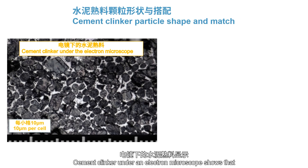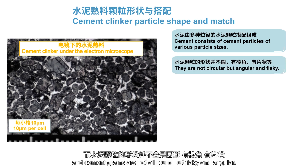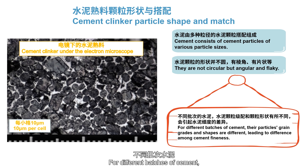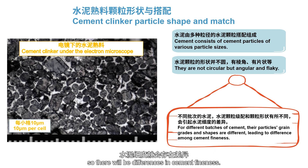Cement clinker under an electron microscope shows that cement clinker is composed of cement grains with various particle sizes, and cement grains are not all round but flaky and angular. For different batches of cement, the gradation and shape of cement grains in the clinker are different, so there will be differences in cement fineness.